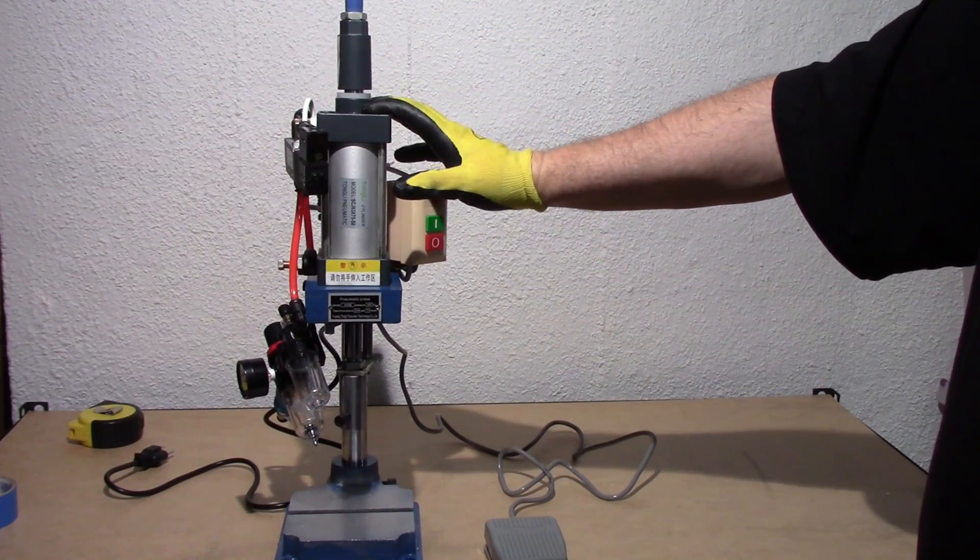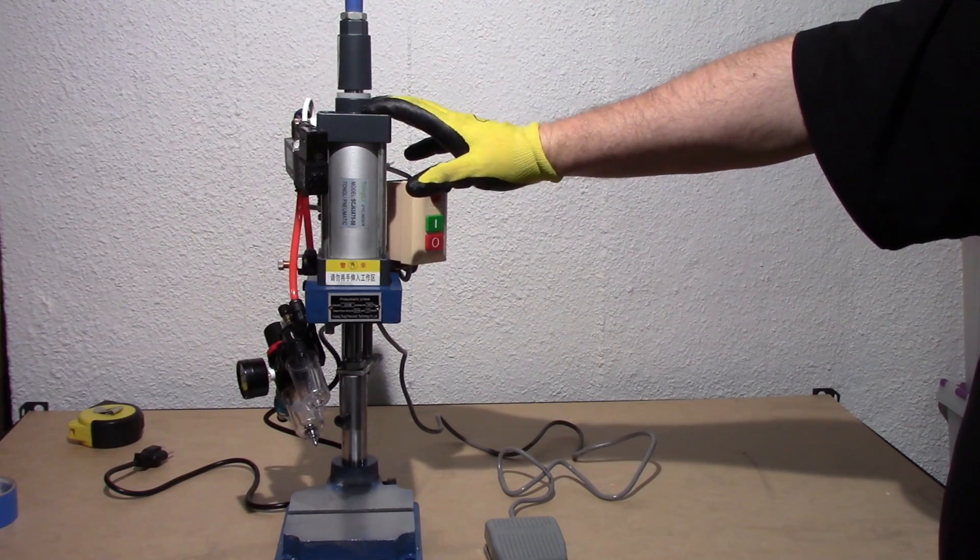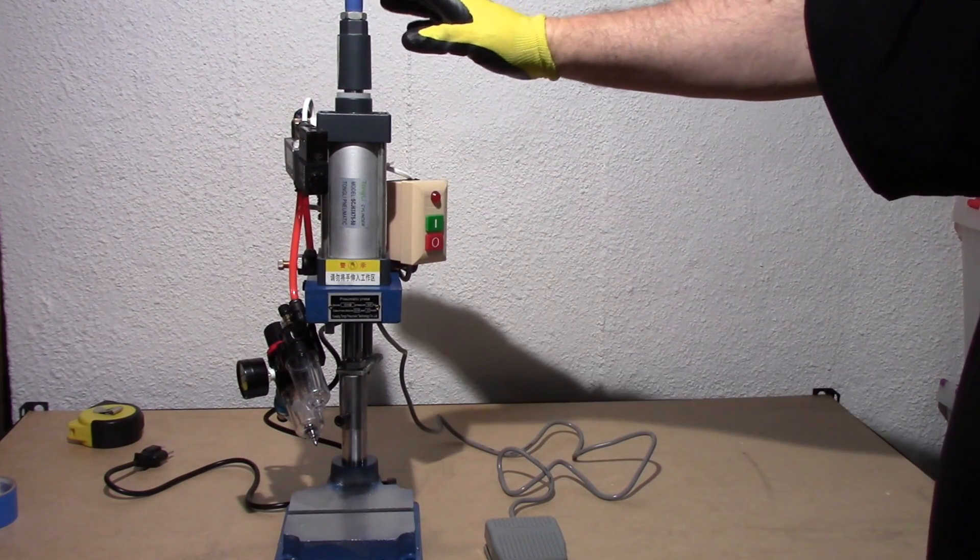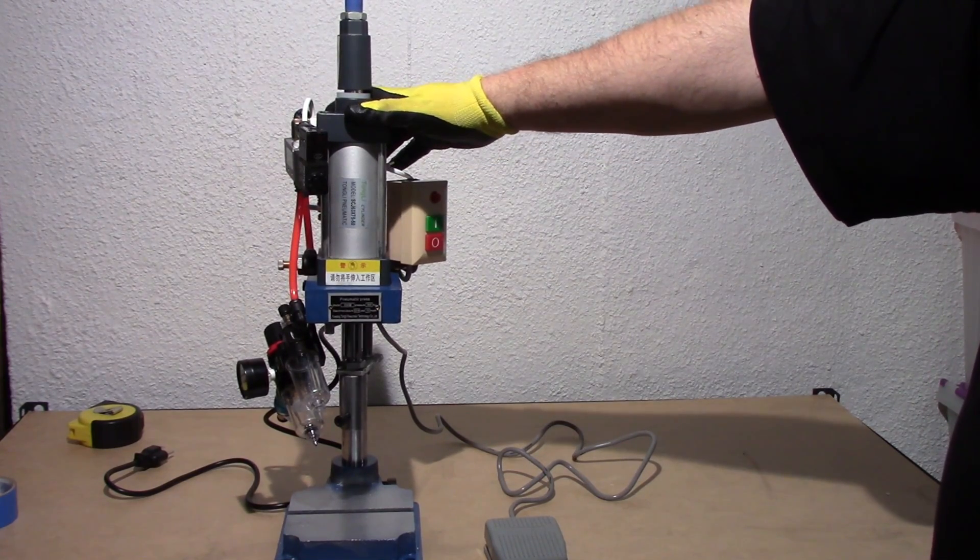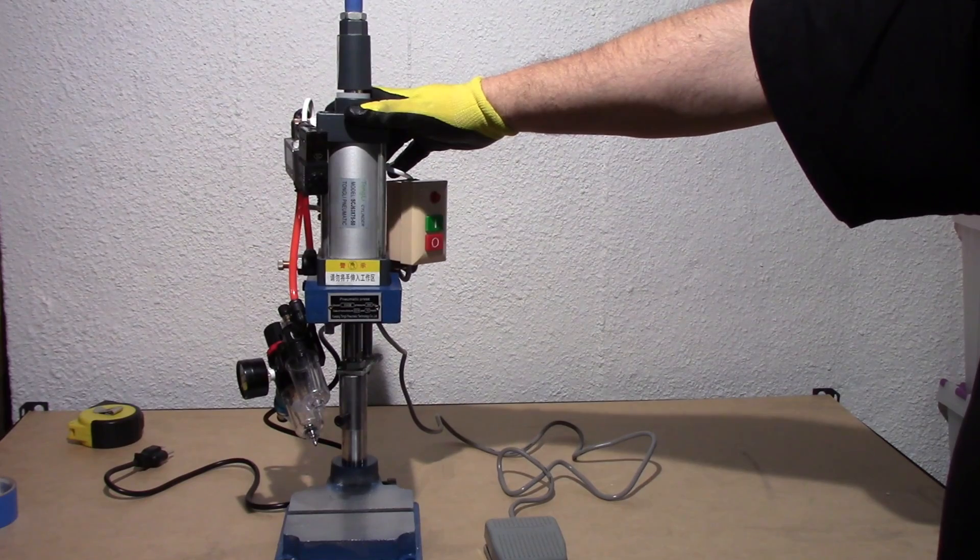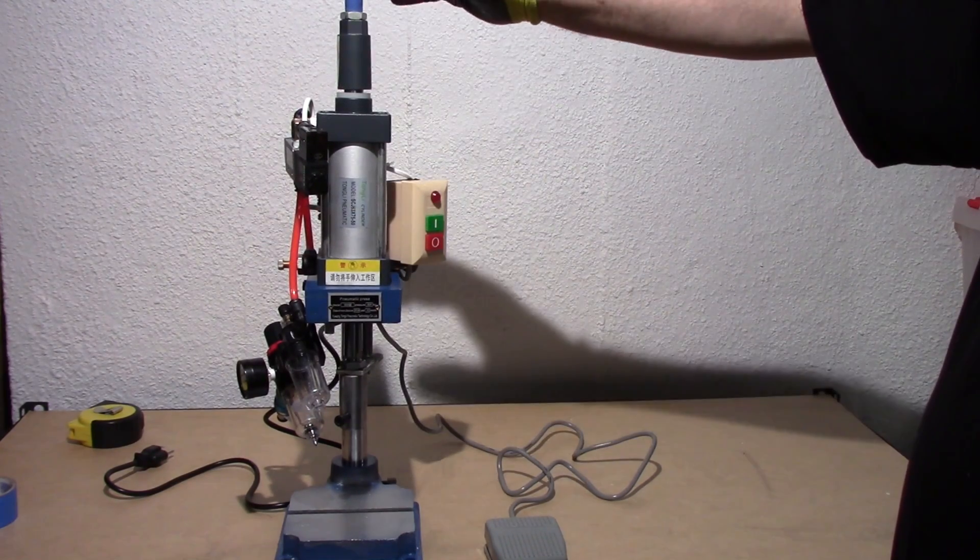This is tough getting out of that Chinese-made crate. Be careful with the nails, that's very sharp. However, what we have here is a small desktop pneumatic press. Picked it up off of eBay for about 180 bucks. There's a couple versions out there and I'll talk about that in a minute.